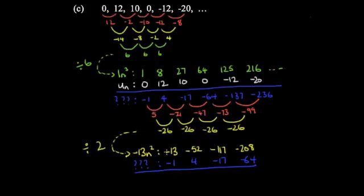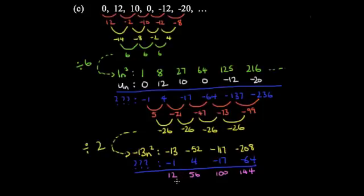To go from −13 to −1 add 12; from −52 to 4 add 56; from −117 to −17 add 100; from −208 to −64 add 144. The differences between consecutive values of this pink line are all 44.